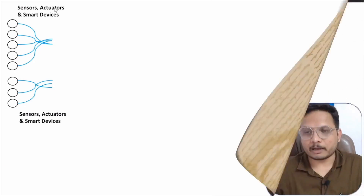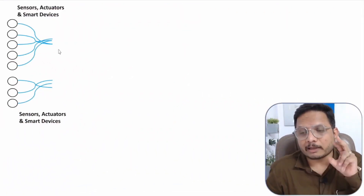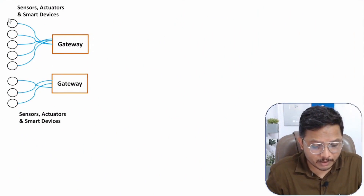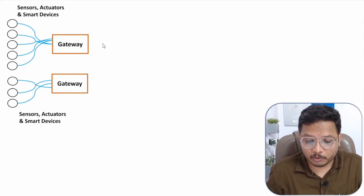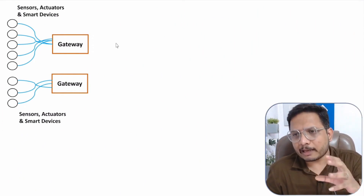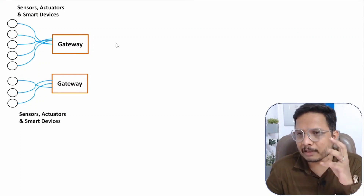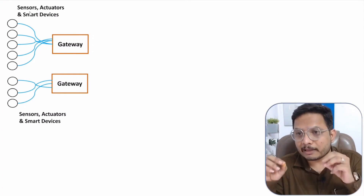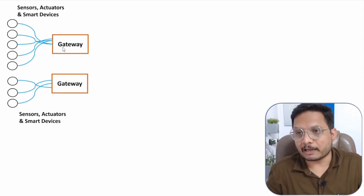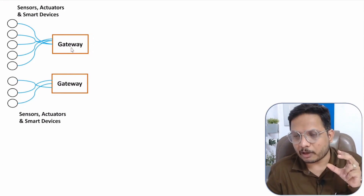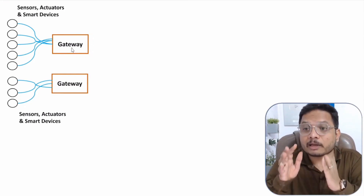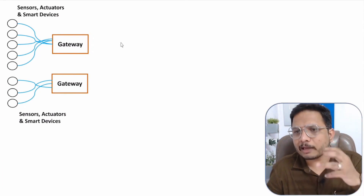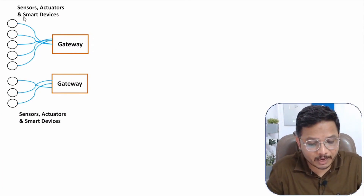The gateway will interact between the thing and the cloud. The gateway also provides some functionalities. When the gateway receives real-time data from the sensor, there will be a large amount of data. With this data, the gateway will perform pre-processing and data filtering, and there may also be some additional processing. On this basis, we can achieve a reduction in the size of the data, so the data forwarded to the cloud by the gateway will be somewhat smaller in size compared to the data given to the gateway by the sensors.